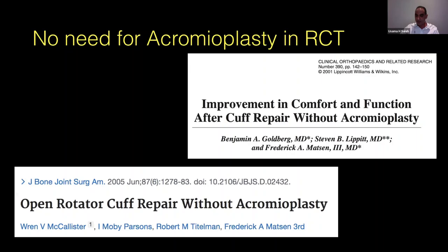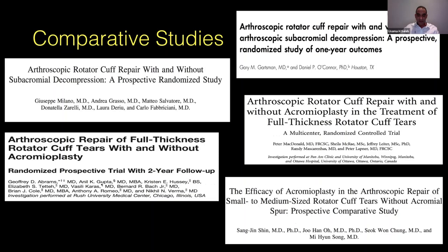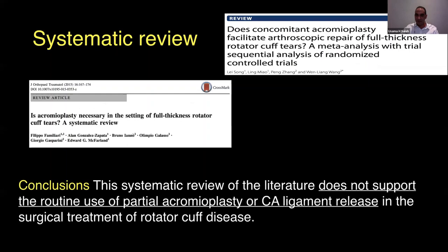The most interesting studies were comparative. In the literature you will find five randomized controlled trials looking at the need for acromioplasty during rotator cuff repair — one group with acromioplasty plus cuff repair, the other with cuff repair alone. These are summarized in two systematic reviews, and the conclusion was that they do not support the routine use of acromioplasty and CA ligament release during rotator cuff repair — the results were the same either way.